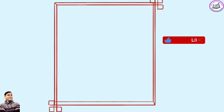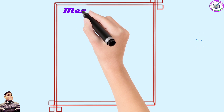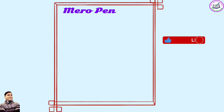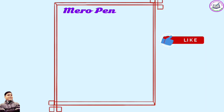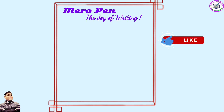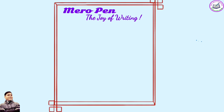Inside the box, the name of the product should be first. The name of the product is Merupin, and we have to give one slogan for that. The slogan here is 'the joy of writing' because it is a pen. We have to give a slogan that fits the product.